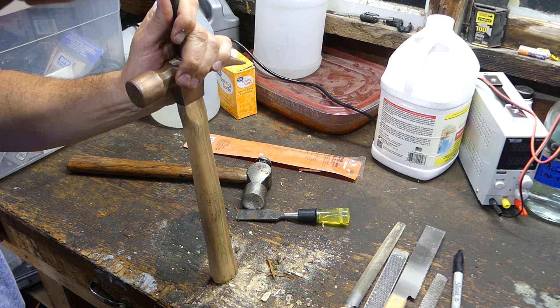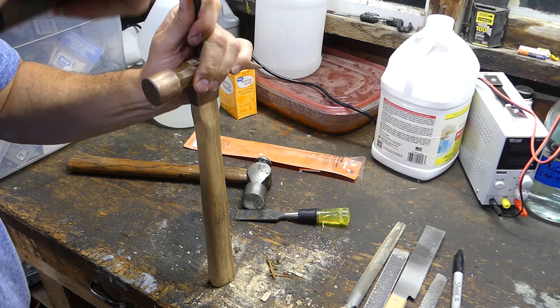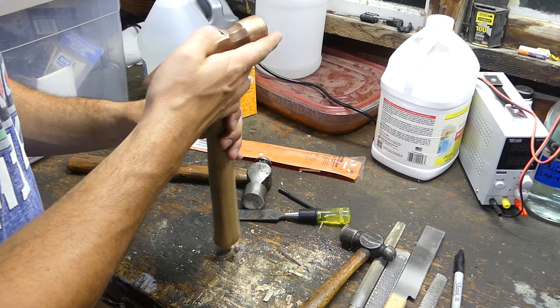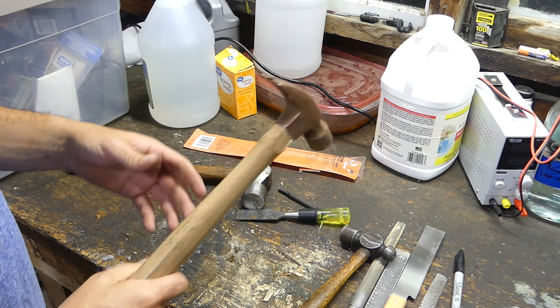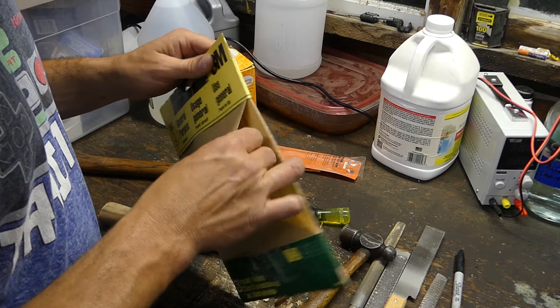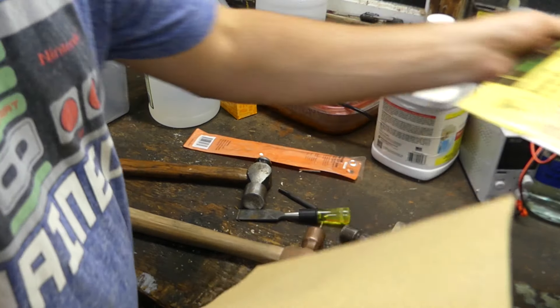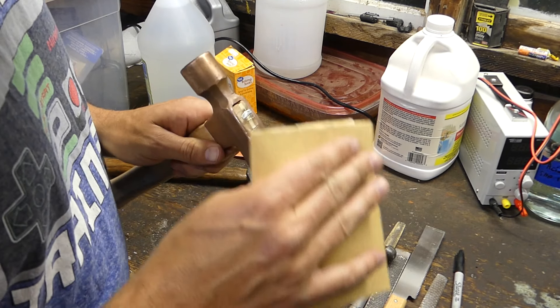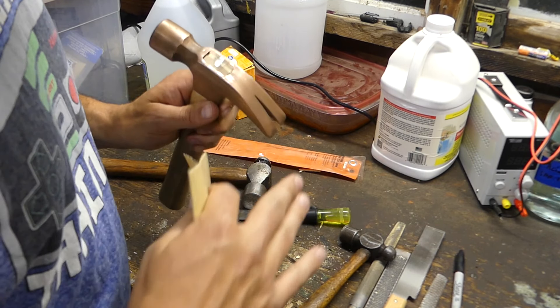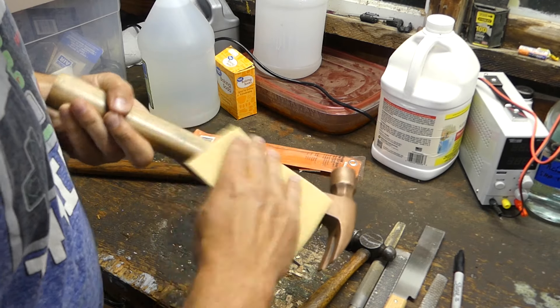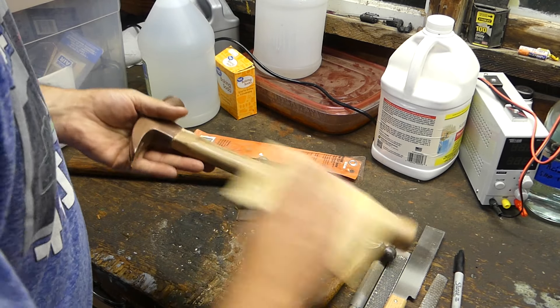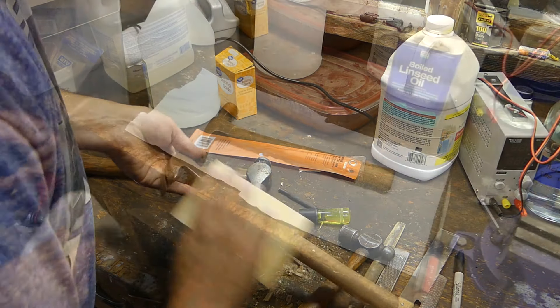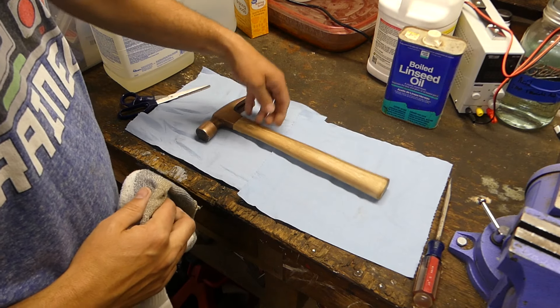Now on the handle right here there was some sticky stuff that's kind of black looking and that's from the sticker they had on it. It also had some kind of finish on the handle already. What I did is I decided to take sandpaper and do a lot of sanding on it. I didn't sand the copper. I just wanted to hit the wood.